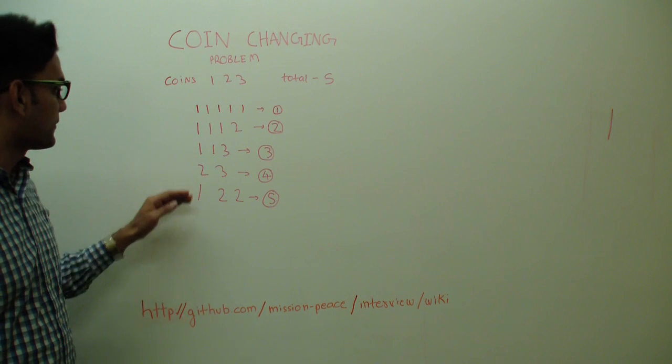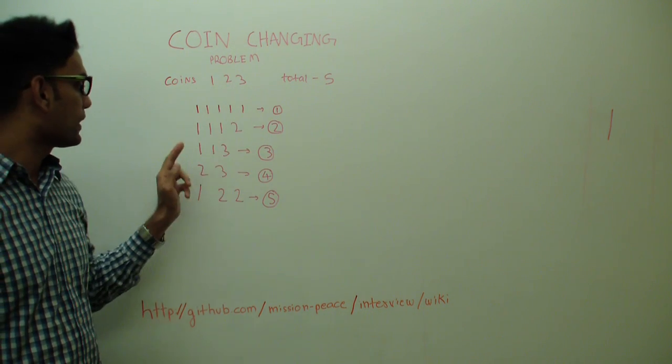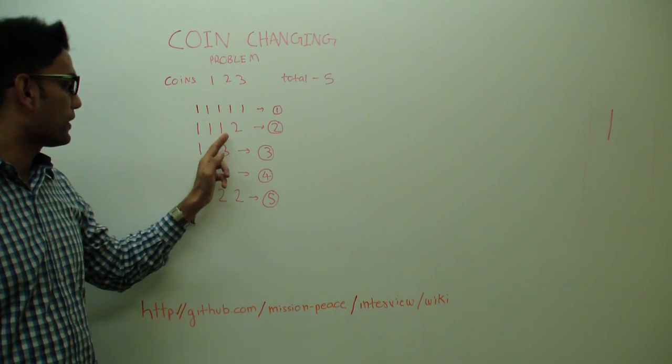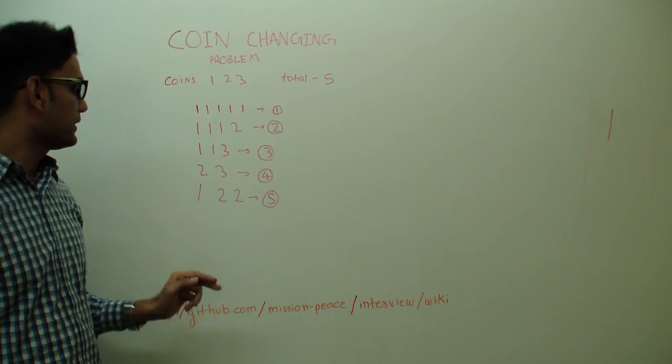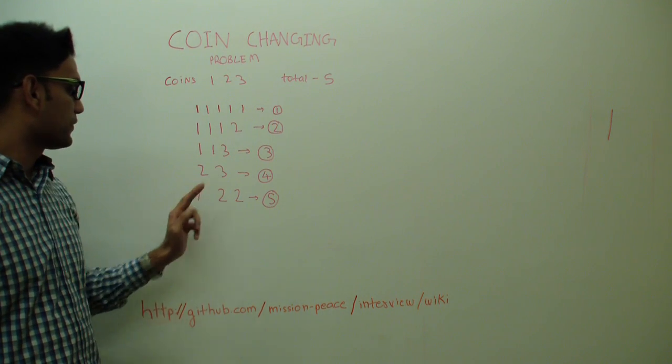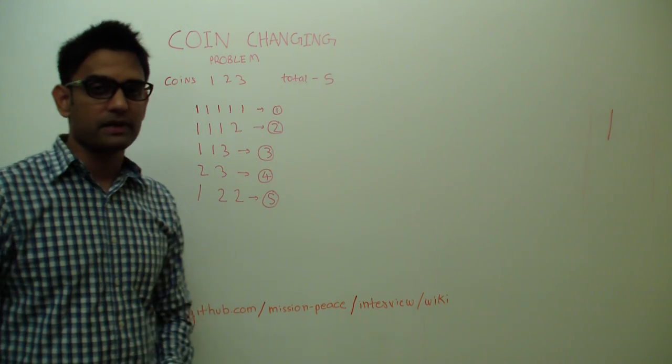We can get 5 in 5 different ways: 1,1,1,1,1; then 1,1,1,2; then 1,1,3; then 2,3; and then 2,2,1. So 5 different ways.